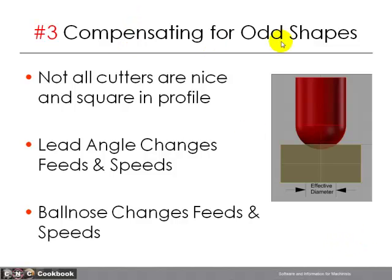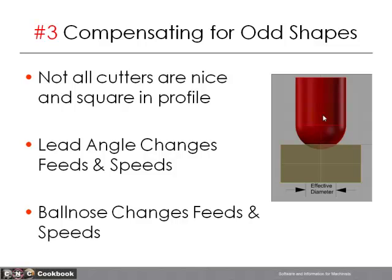Problem number three: compensating for odd-shaped cutters. Not all cutters are nice and square in profile. Some end mills have a radius on the tip; a face mill may have a lead angle other than 90 degrees. A 45-degree lead angle face mill gives a nice surface finish and lower cutting forces, but you have to compensate for that lead angle in your feeds and speeds calculation. A ball nose cutter is the best example: if you have a half-inch ball nose but you're cutting at a depth less than the ball's radius, your effective diameter is actually much less than half an inch, and that changes your feeds and speeds — you'll want to run it differently to get optimum results.